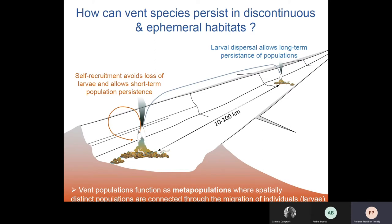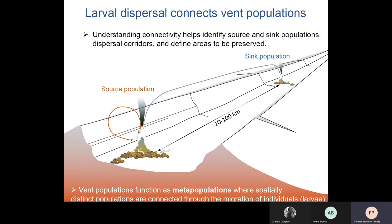Larvae may also reach distant sites if they are able to travel, and this will define how distinct populations are connected. This connection will depend on many factors including larval biology, deep sea topography, topographic barriers, etc. We say that vent populations function as a meta-population, which is a network of spatially distinct populations that are connected through the migration of larvae.